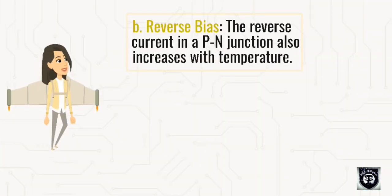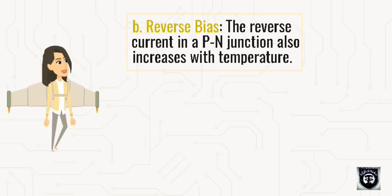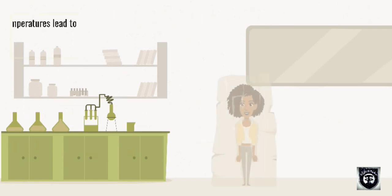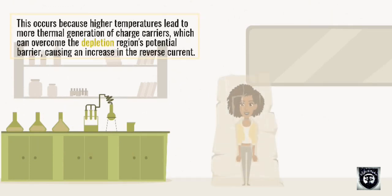Reverse bias: The reverse current in a P-N junction also increases with temperature. This occurs because higher temperatures lead to more thermal generation of charge carriers, which can overcome the depletion region's potential barrier, causing an increase in the reverse current.